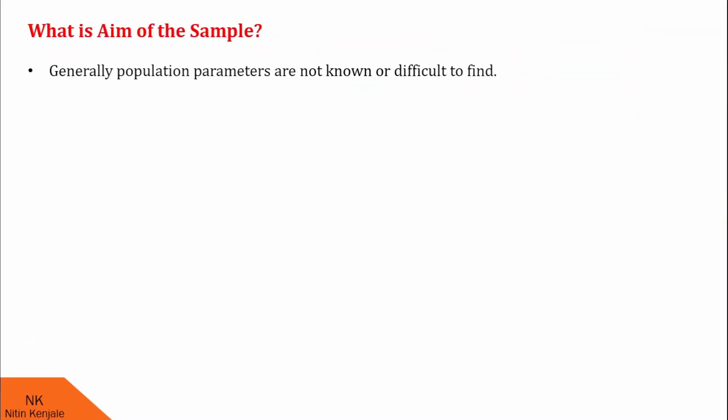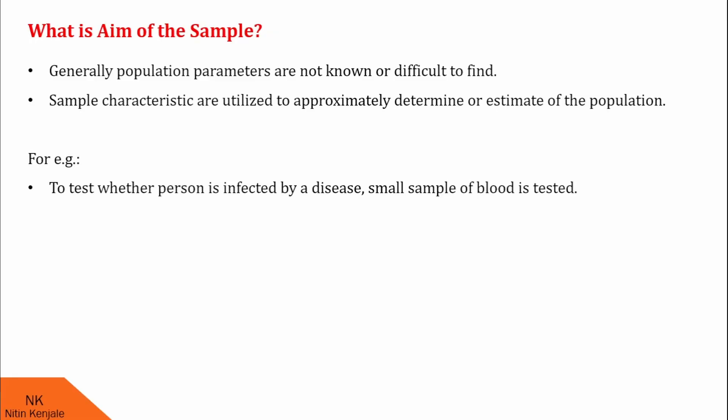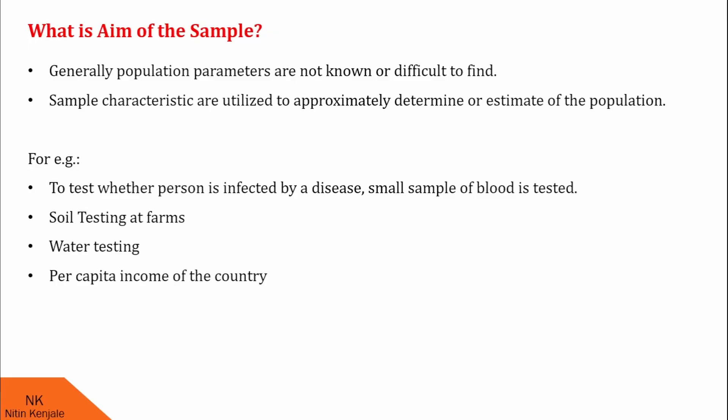Now we proceed to the next question: what is the aim of the sample. Generally, population parameters like mean and variance are not known or are difficult to find out. Therefore, we utilize sample characteristics to approximately determine or estimate the population. For example, to test whether a person is infected by a disease, a small sample of blood is tested. Similarly, to test soil at farms, we take samples. In water testing, we also take a sample. Also, for per capita income of a country, we take a sample of a few people.